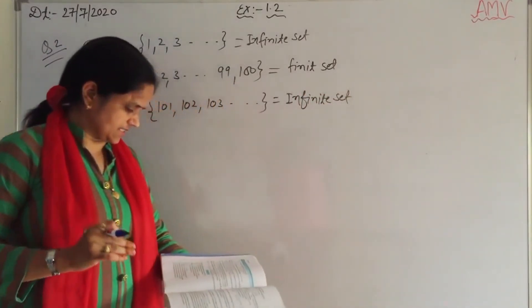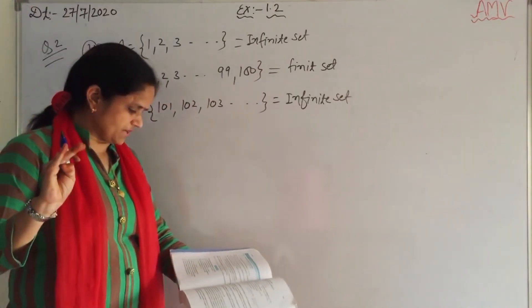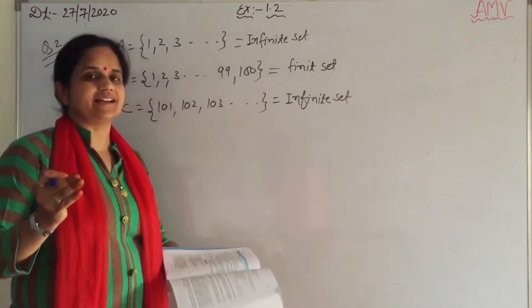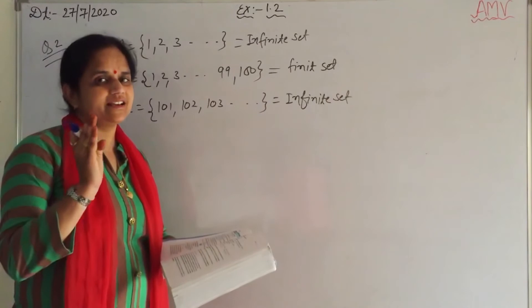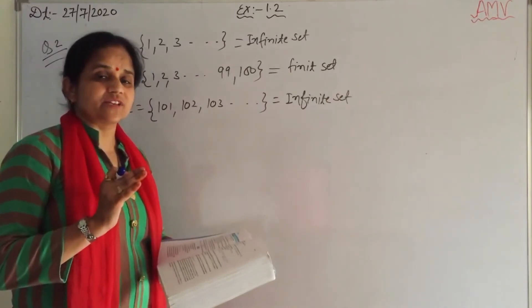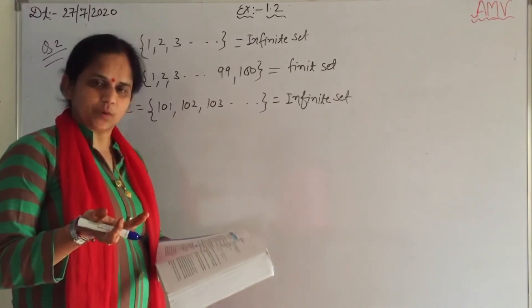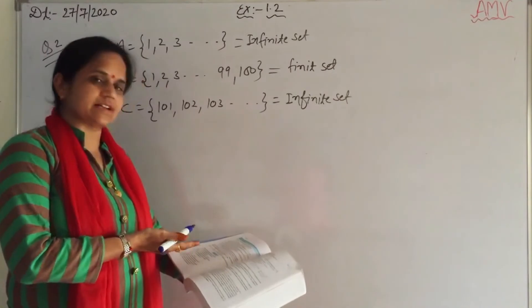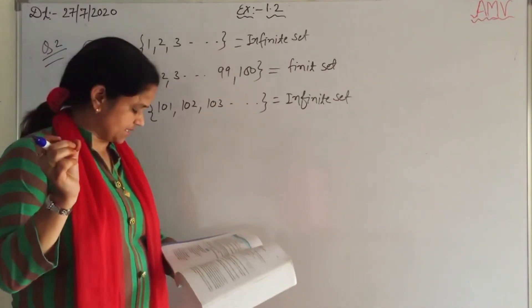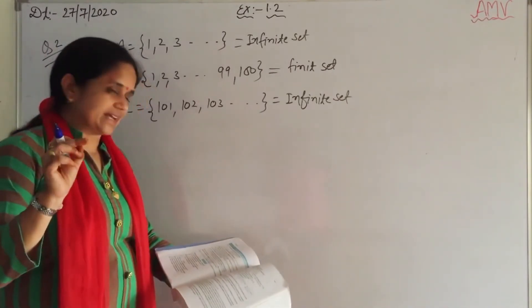Next: the set of prime numbers less than 99. It is a finite set, since this set has a finite number of elements.